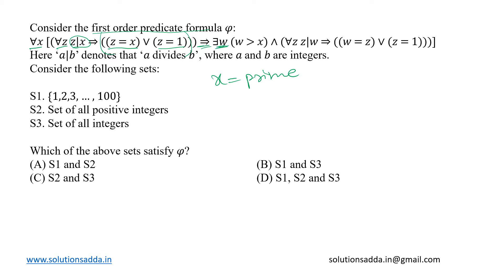And for all z, if z divides w, then either w will be equal to z or z will be one. Now this part is again implying that w is also a prime number.